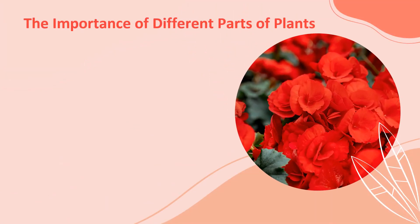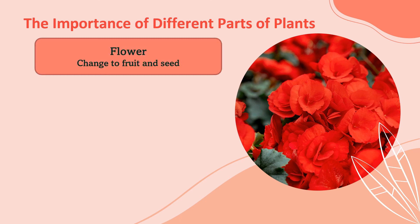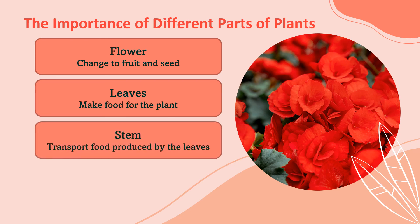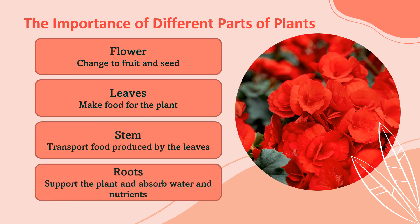What are the importance of different parts of plants? Number one, flower: changes into fruit and seed. Number two, leaves: make food for the plant. Number three, stem: transports food produced by the leaves. And number four, roots: support the plant and absorb water and nutrients from the soil.